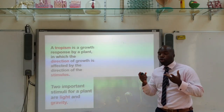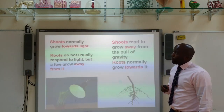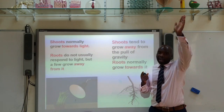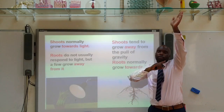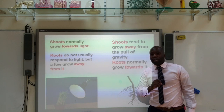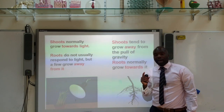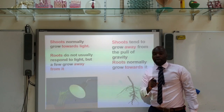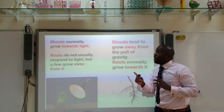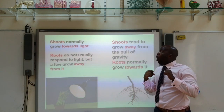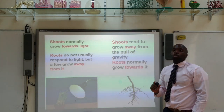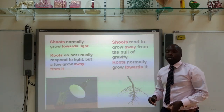Shoots will normally grow towards the light; they carry the leaves. Roots don't usually respond to light, but sometimes they will grow away from it. With respect to gravity, shoots tend to grow away from the pull of gravity — they grow upward. However, roots normally grow towards the pull of gravity. These are examples of positive and negative tropisms.